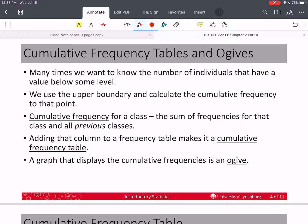All right. So we're going to use the upper boundary of each of the classes and calculate the frequency up to that point, which is called the cumulative frequency. It's the sum of frequencies for that class and all the preceding class or previous classes.